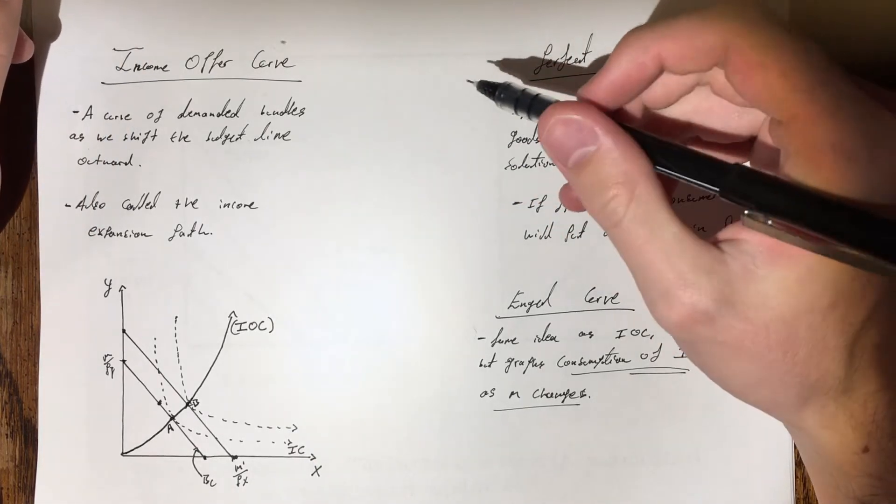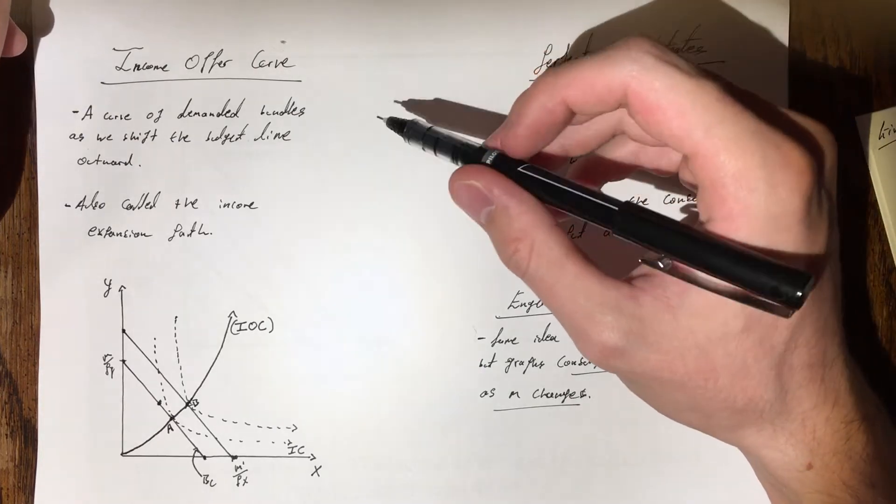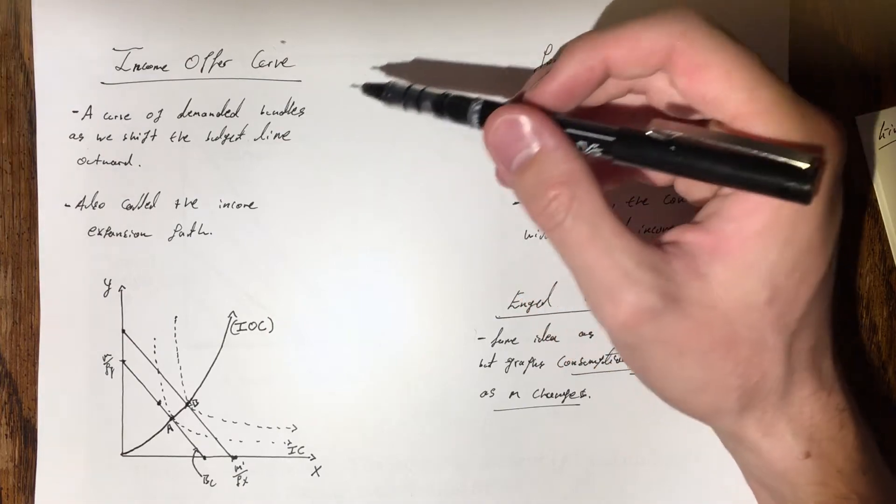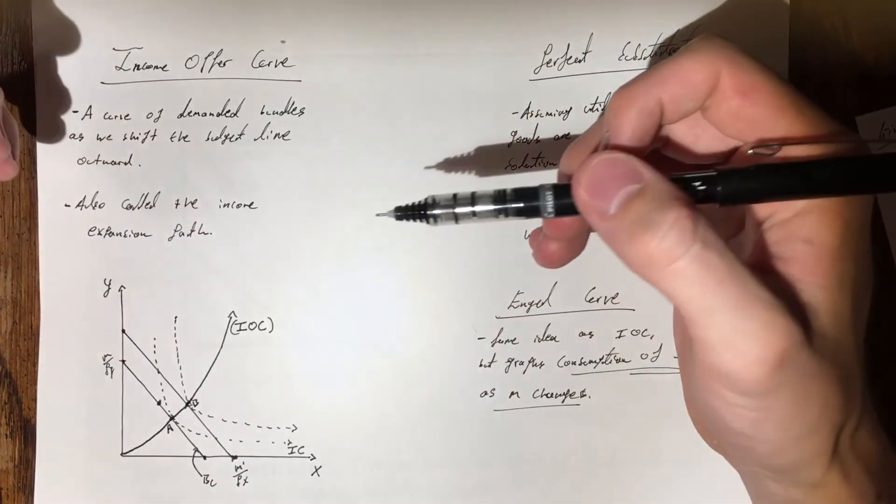Before we get into the graph itself, I'll give a quick overview of some of the concepts we should be aware of. The first is the income offer curve. It's essentially a curve of our demanded bundles, the optimal bundles, as we change our income.